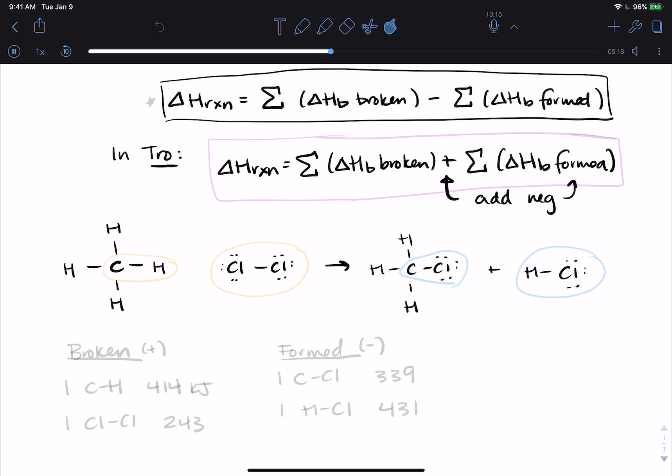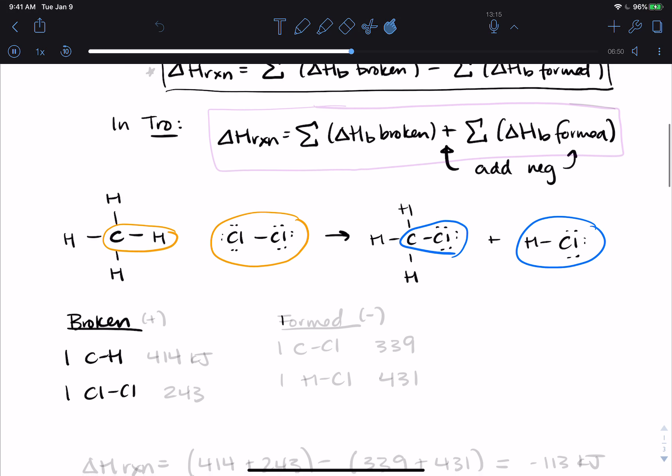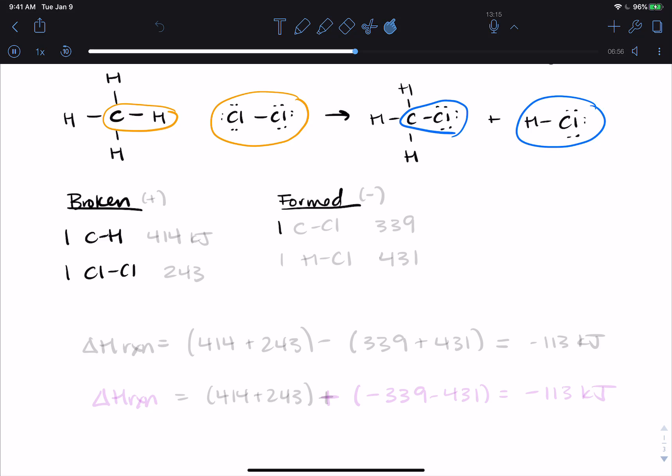So CH4 plus Cl2 turning into CH3Cl and HCl. So we broke one carbon-hydrogen bond, one chlorine-chlorine bond, and we formed one carbon-chlorine bond and one hydrogen-chlorine bond. So broken is one C-H, one Cl-Cl, and then I'm going to leave some space. I really recommend setting this up this way because now you have a data table that you can fill in. We formed one C-Cl and one H-Cl.